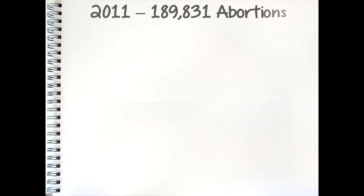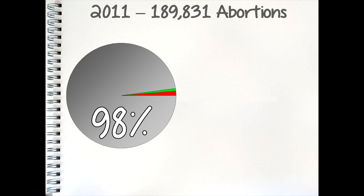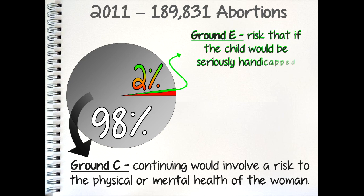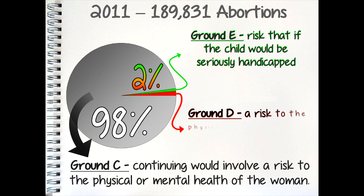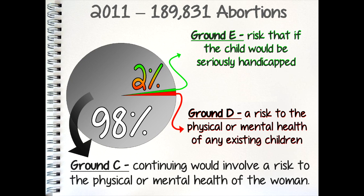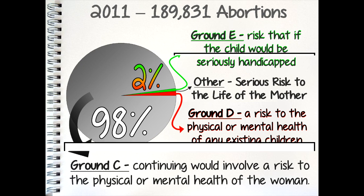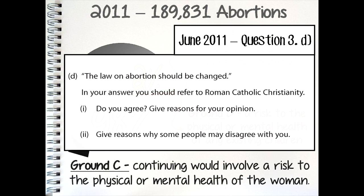In the UK, there are approximately 150 to 200,000 abortions each year. The vast majority, 98%, are conducted on grounds C, which states that continuing with the pregnancy would involve a risk to the physical or mental health of the pregnant woman. Of the other 2%, the most common grounds used are grounds E, where there is a substantial risk that if a child were born it would suffer from physical or mental abnormalities as to be seriously handicapped — sometimes called fetal abnormality — or grounds D, where there is a risk to the physical or mental health of existing children or the family of the pregnant woman. Less than 0.1% of abortions are conducted to save the life of the pregnant woman. It is worth knowing these figures, as some previous exam questions focus on whether there are too many abortions or whether the law on abortion needs to change — for example, the 2011 paper Question 3D gave the statement: 'The law on abortion should be changed.'